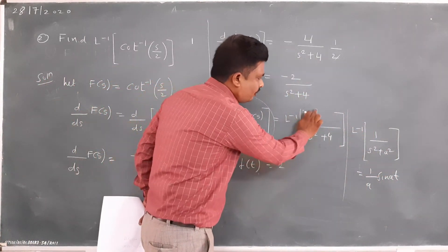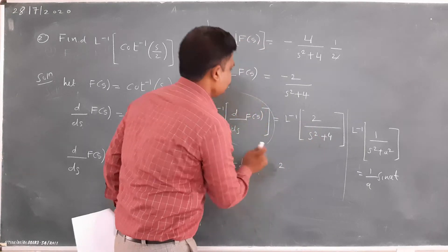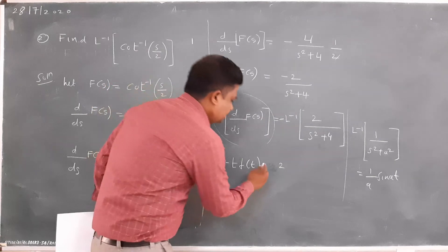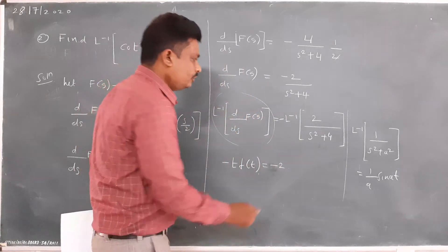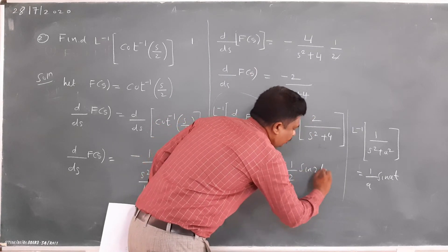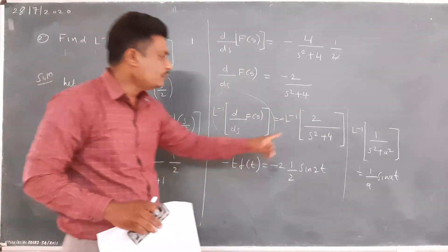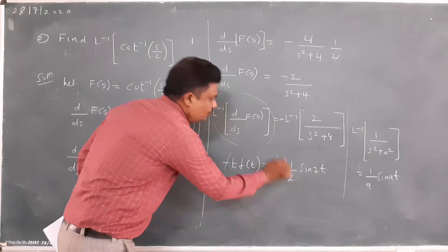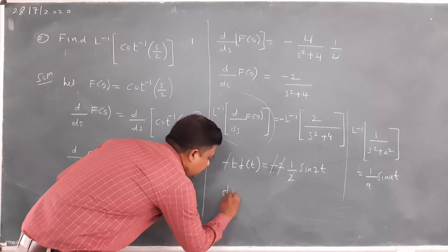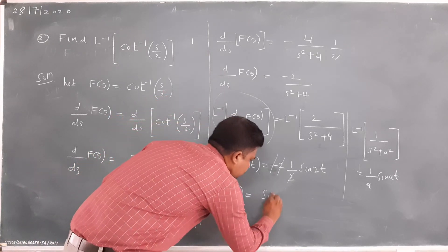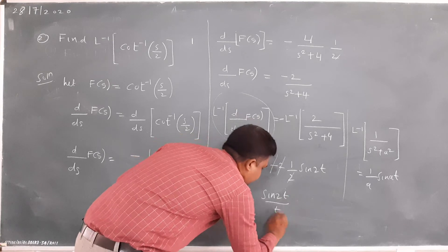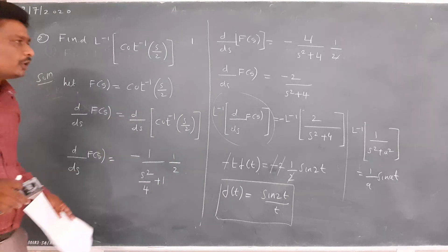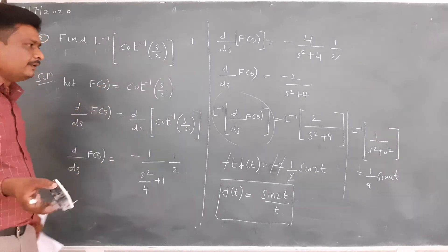So L⁻¹{1/(s²+2²)} = (1/2)sin(2t). The minus signs cancel and the 2s cancel, therefore f(t) = sin(2t) / t. This is the answer to the second problem on the derivative concept. Now I will take one more example.